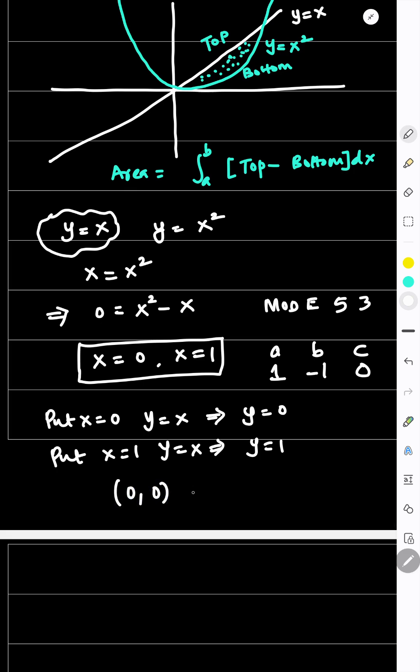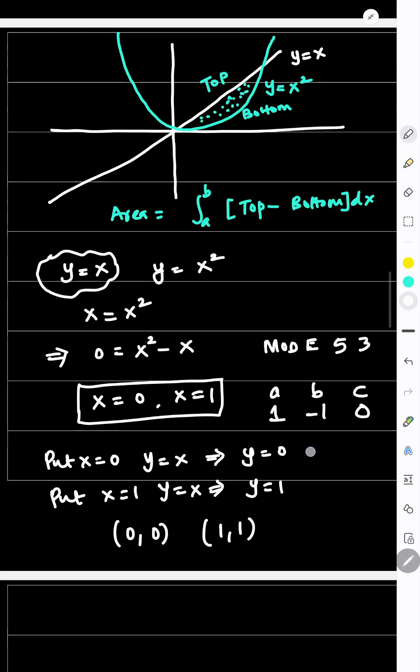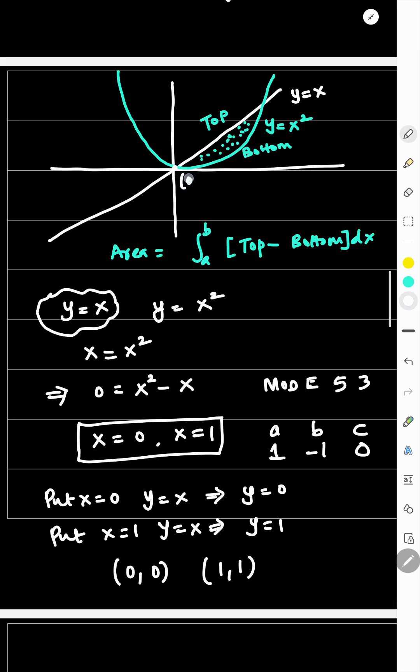So what are the points of intersection? There are two points: 0, 0 and 1, 1. So this point is 0, 0 and this point is 1, 1.